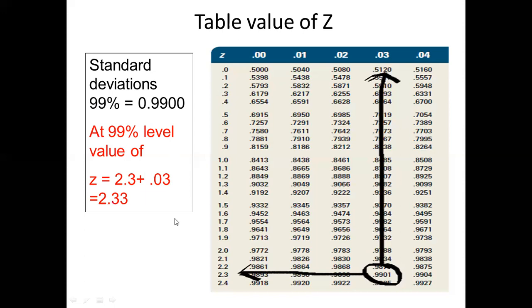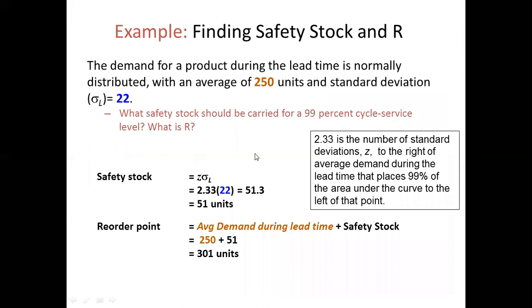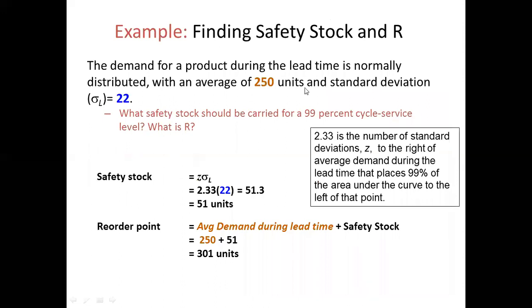The demand for a product during lead time is normally distributed with an average of 250 units and a standard deviation of 22. The safety stock should be carried for a 99% cycle service level. The Z value for 99% is 2.33, so safety stock = Z × Sigma_L = 2.33 × 22 = approximately 51 units.